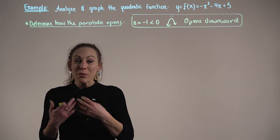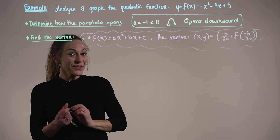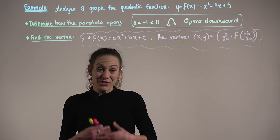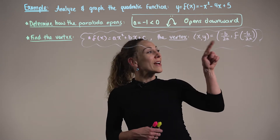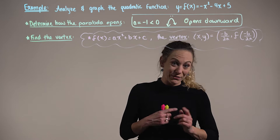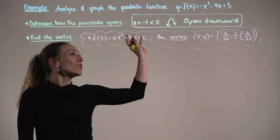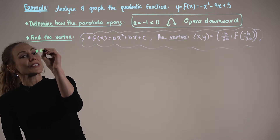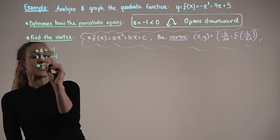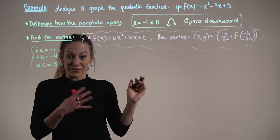Now that we know the shape of our parabola, we want to find the vertex. If we have a quadratic function in standard form ax² + bx + c, the vertex is defined by x = -b / 2a, and we find y by substituting that x-coordinate back into the function. Looking at our quadratic function, we identify: a = -1, b = -4, and c = 5.